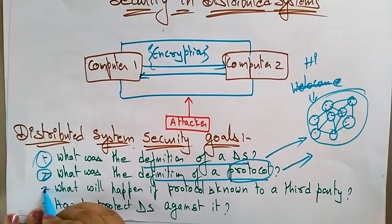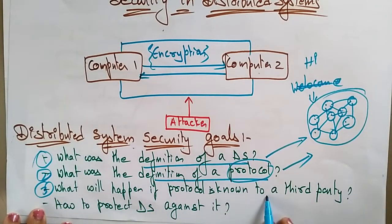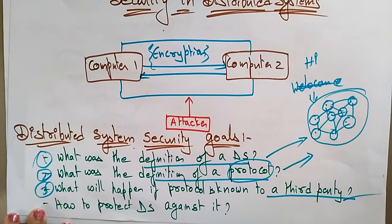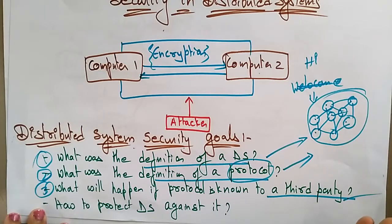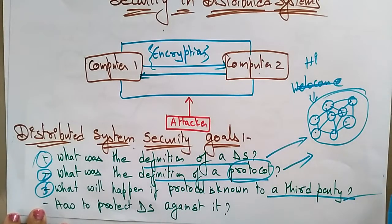The next goal is: what will happen if the protocol is known by a third party? We have to consider that if our important message is hacked or attacked by an attacker, how much loss occurs — whether you are sending a normal message or a high-risk message. The security levels will vary accordingly. Based on that, encryption algorithms are set for those messages.